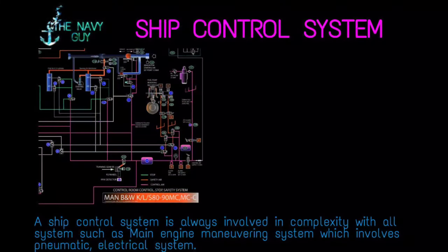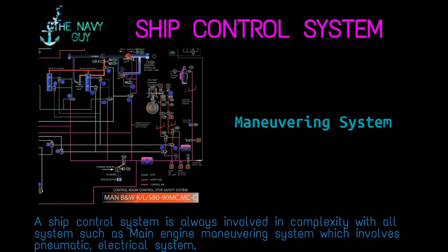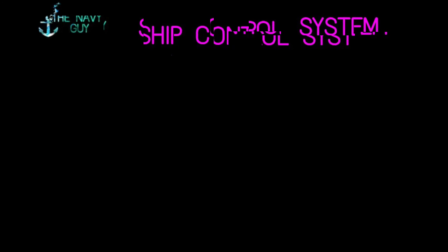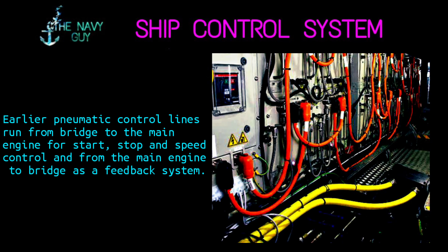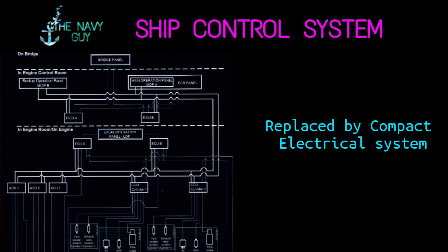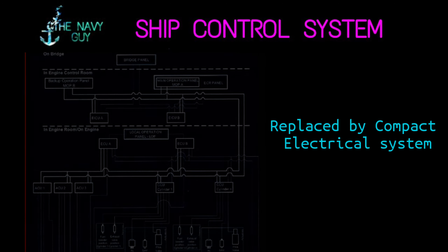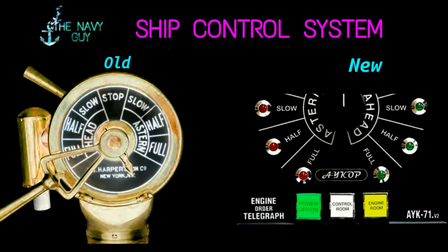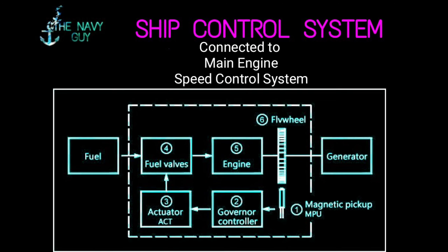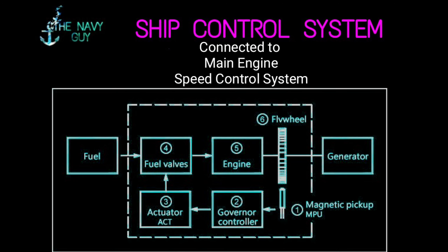A ship control system is always involved in complexity with all systems, such as the main engine maneuvering system, which involves pneumatic and electrical systems. Earlier, pneumatic control lines ran from the bridge to the main engine for start, stop, and speed control, and from the main engine to the bridge as a feedback system. With advancement in electrical sensors and controllers, most have been replaced by the electrical system. One means of communication from the bridge to the engine room is the telegraph, electrically connected with solenoid valves, with all commands connected to the main engine speed control system via pneumatic and electrical signals.